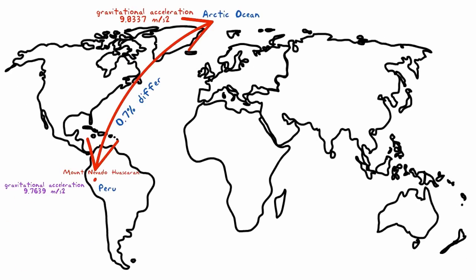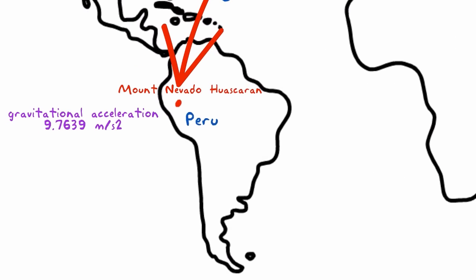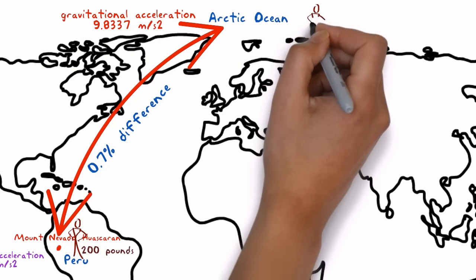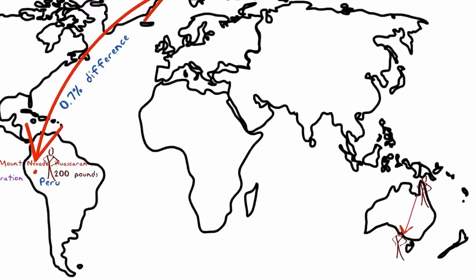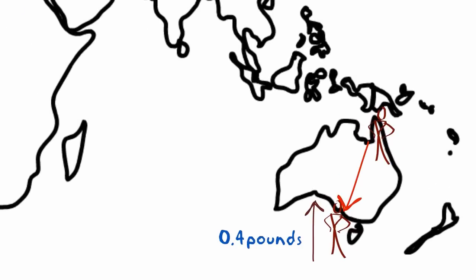That means gravity varies by about 0.7%, so a 200-pound person weighs 1.4 pounds more at the Arctic Ocean than at Peru's Nevado Huascarán summit. That same person would weigh 0.4 pounds more in Tasmania than in Queensland, for example.